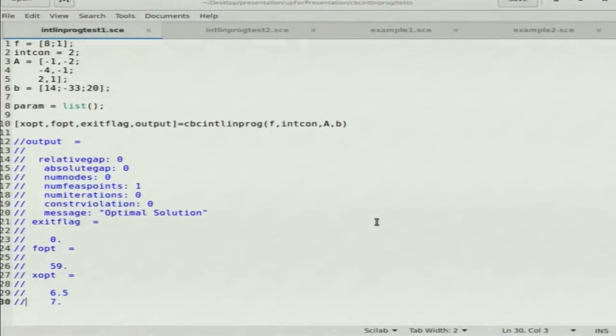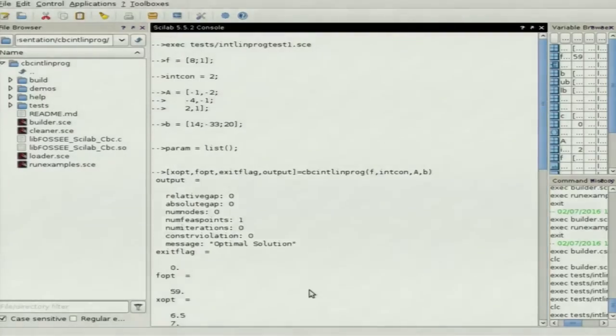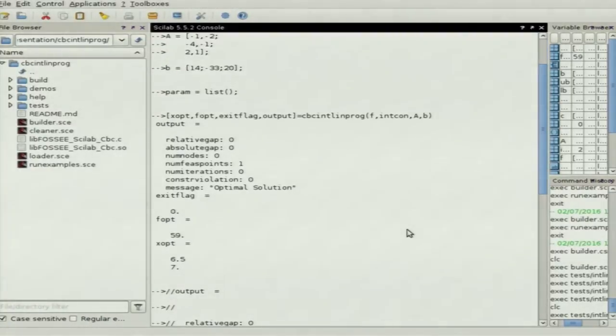So basically this is the code, same thing, same function, same integer constraints A, B and we'll pass some extra parameters. If we don't want to pass parameters we can put a list, maybe something of that sort and then after that we run the function. So we get the same output, we can see. So we have calculated everything apart from the points, apart from the value, we have also tried to calculate relative gap, absolute gap, number of nodes used, number of visible points, number of iterations, constant violation and the message that optimal solution is found. So it's at 6.5 and 7 and the function value is 59. So it is same to what we get in MATLAB.